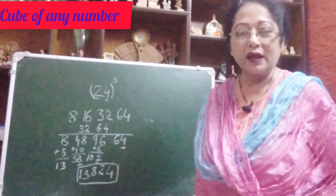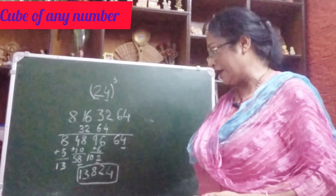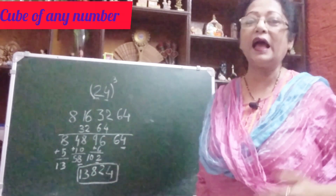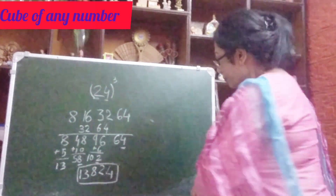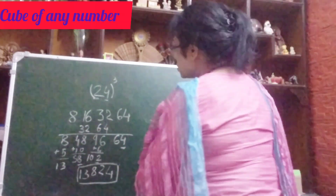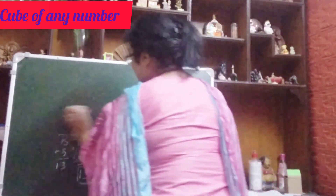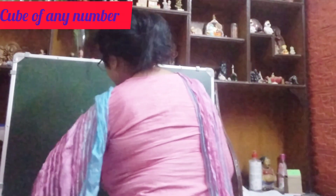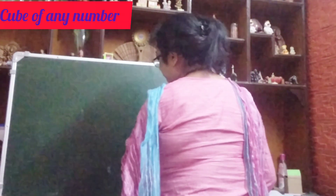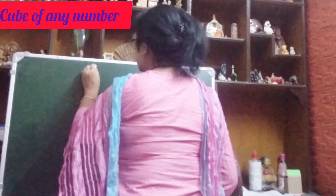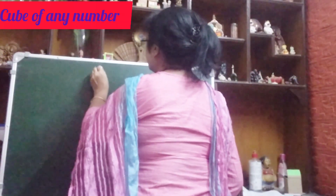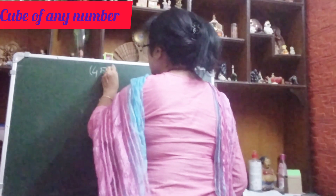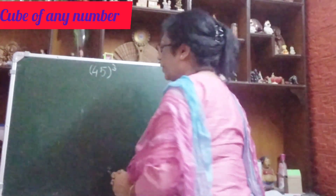Is it clear? I think it is clear to all of you, do not worry. I am taking one more number, let us do. Let me take a little bigger number and you see how I am doing this. I am taking 45 whole cube, 45 cube.